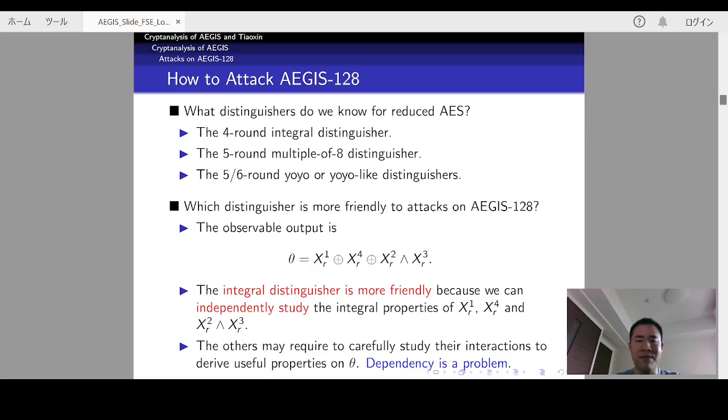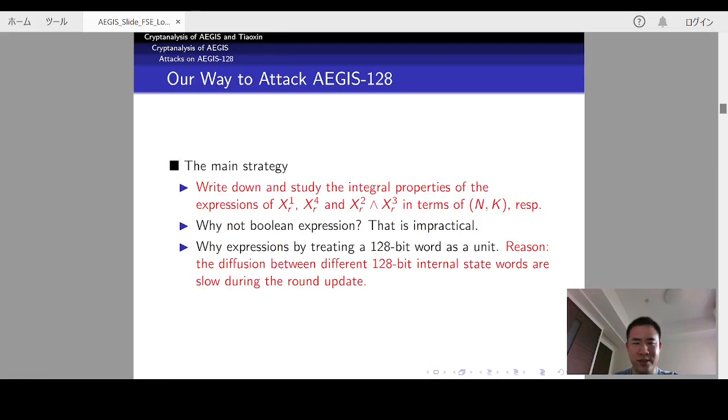However, not all of them are friendly to our attacks. The main problem is that what the attacker knows is only theta, not the exact value of each block of internal state. Obviously, the integral distinguisher is more friendly because we can independently study the integral properties of XR1, XR4, and XR2 and XR3. However, if we use the remaining distinguishers, we may be required to study the interactions between them, which will increase the difficulty to analyze it. So, we finally chose to use the integral distinguisher to analyze reduced AEGIS-128.